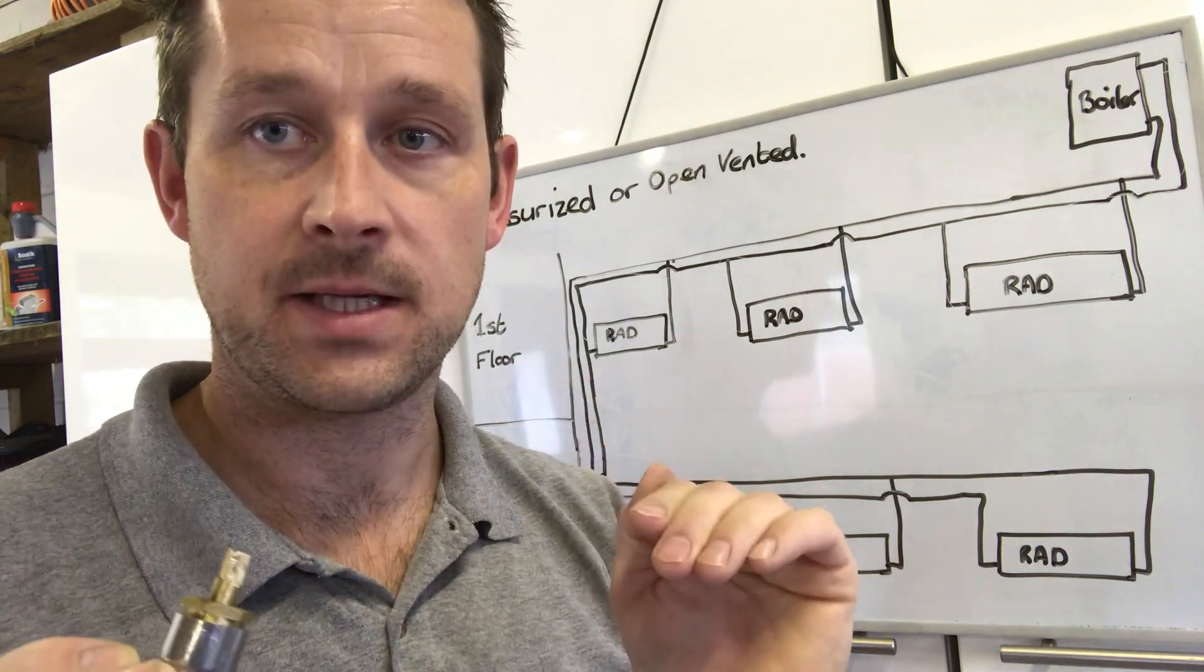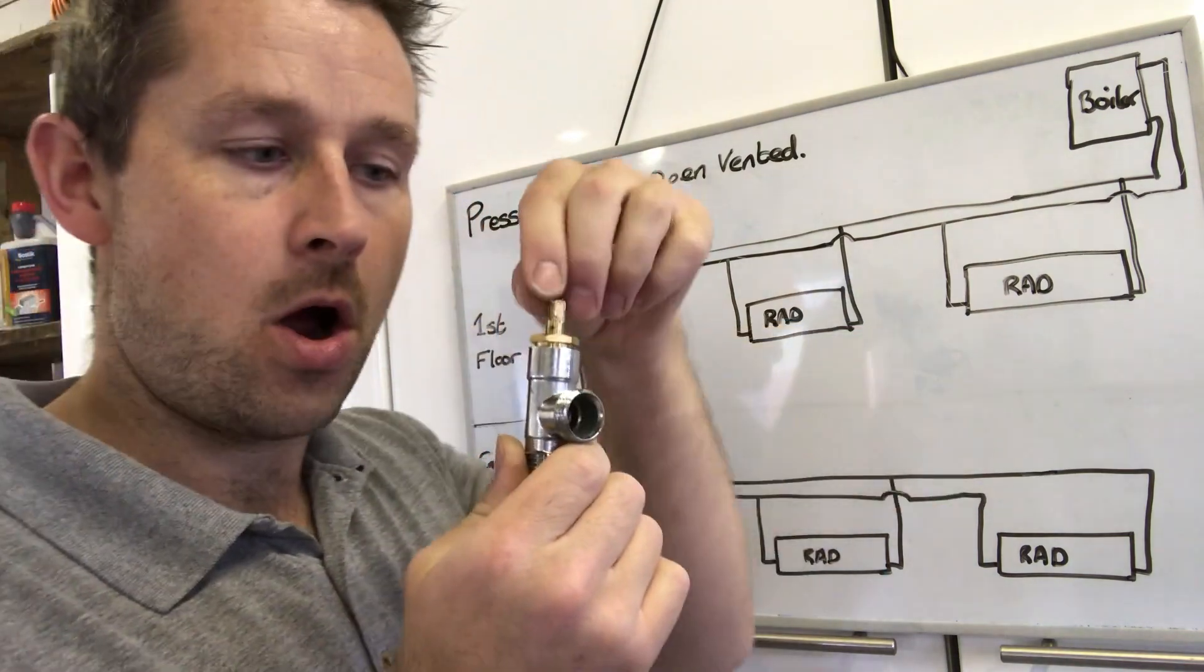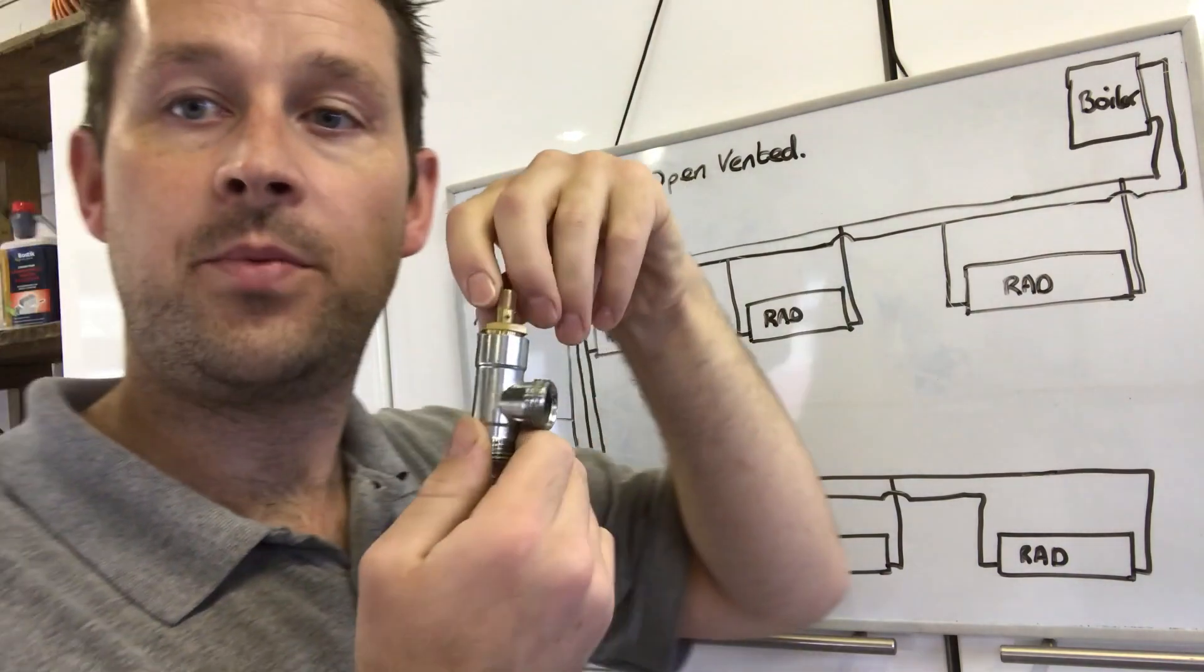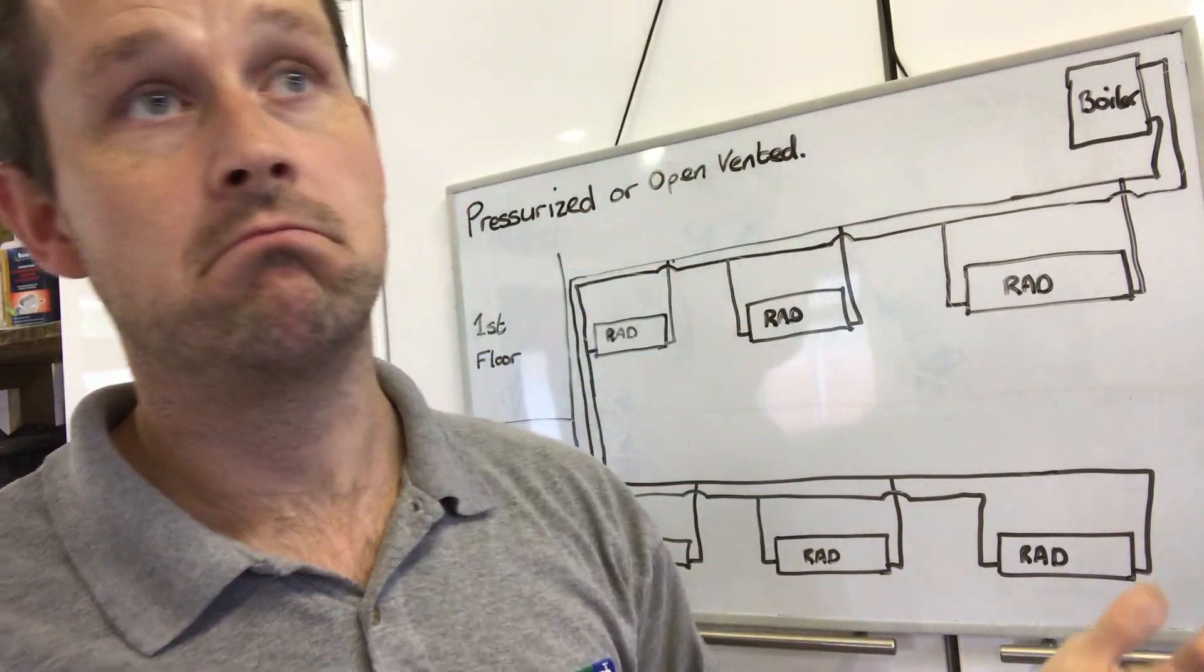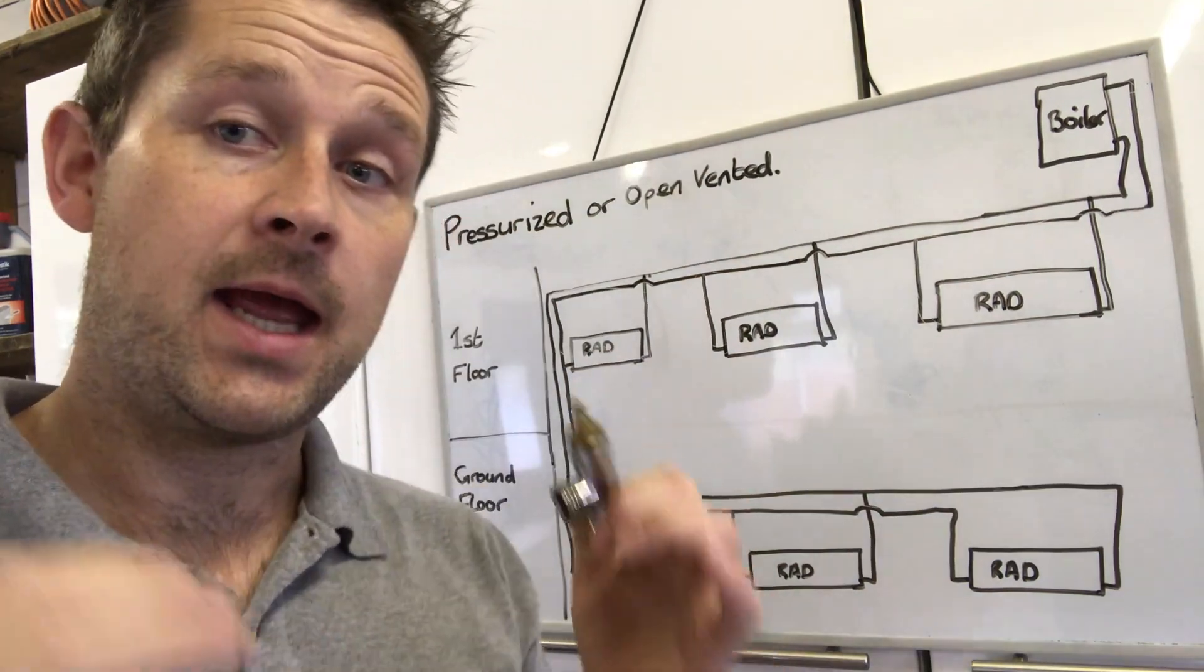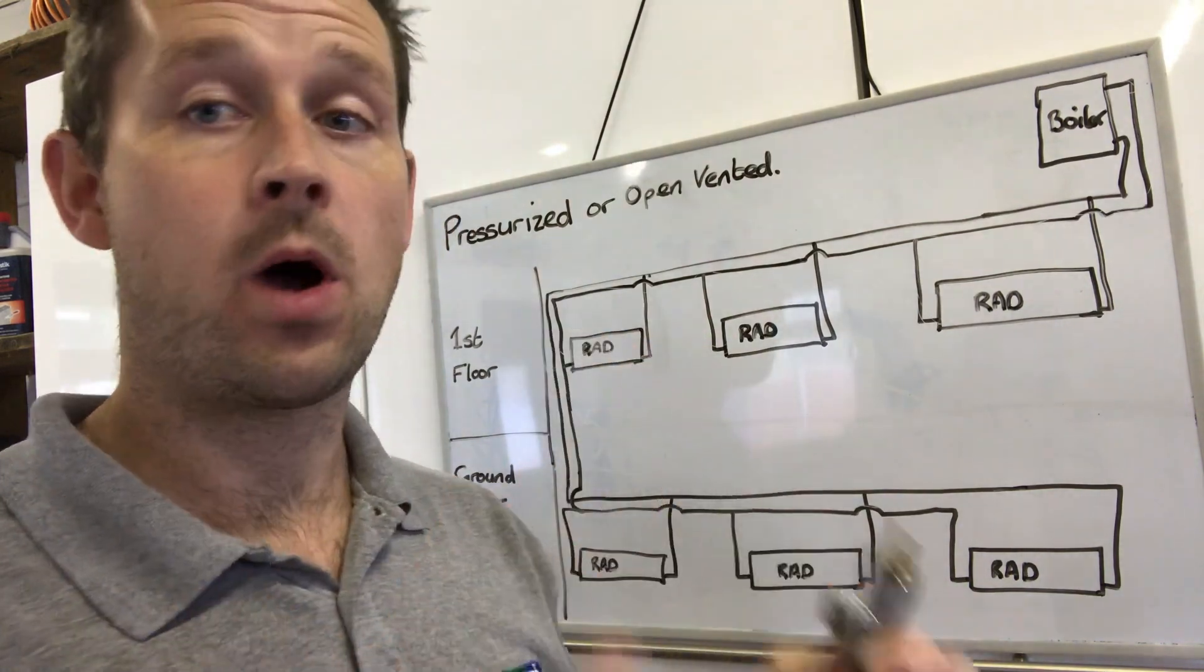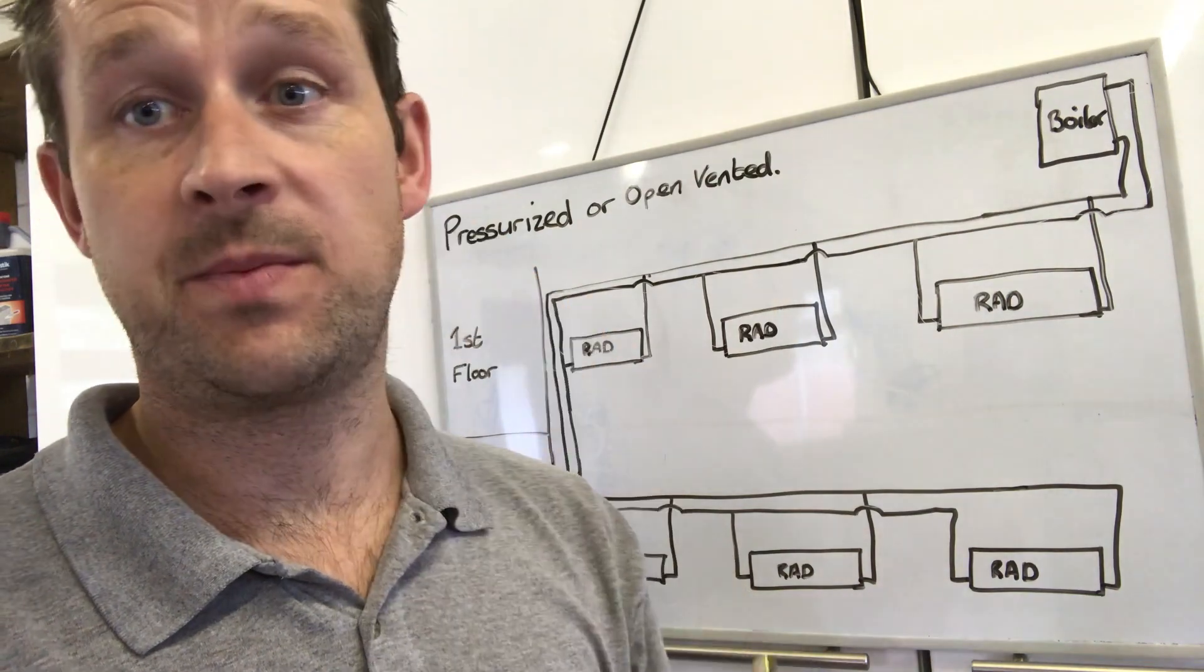That is generally the basic starting point. So just to recap on that, downstairs open one turn, upstairs open it one and a half turns, and you'll find that 90% of the time solves all the issues. That in a nutshell is generally how we balance the radiator system and why we balance the radiator system.